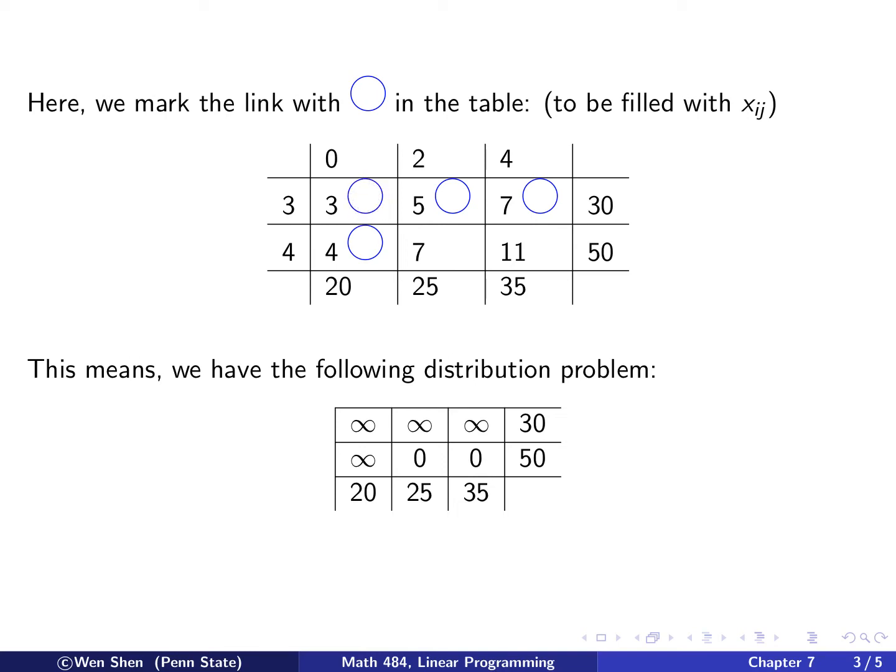This notation basically says that we have a distribution problem which we can write out. Now, wherever you are linked, the capacity is infinite. And wherever you are not linked, the capacity is 0. So I have the problem like this: infinity, infinity, infinity, infinity, 0, 0. That's O1, that's O2, and that's D1, D2, and D3.